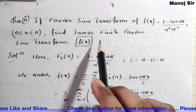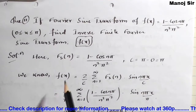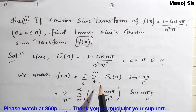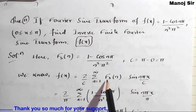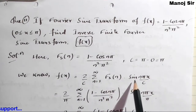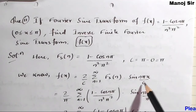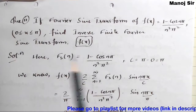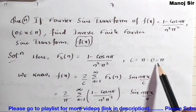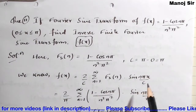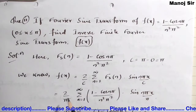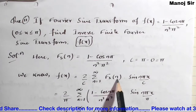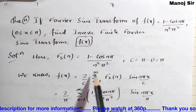As per the formula for inverse finite Fourier sine transform, f(x) equals (2/c) times the summation from n = 1 to infinity of Fs(n) times sin(nπx/c). Here c equals π minus 0, that is π. So substituting, we get (2/π) times the summation.